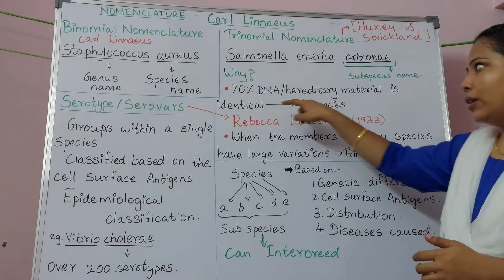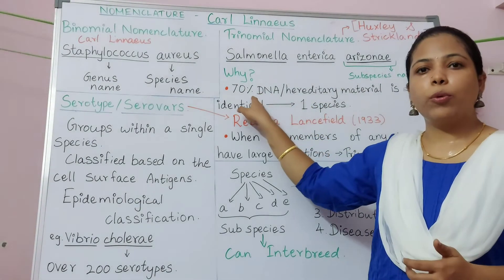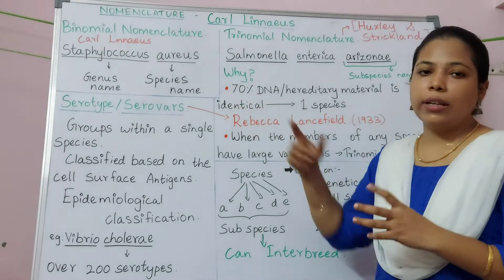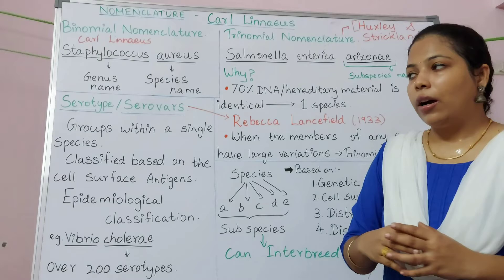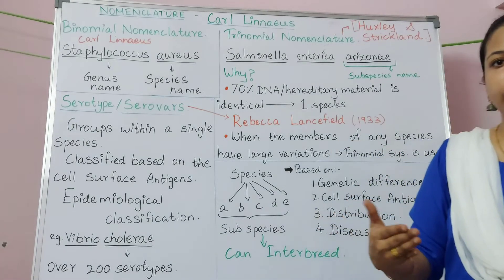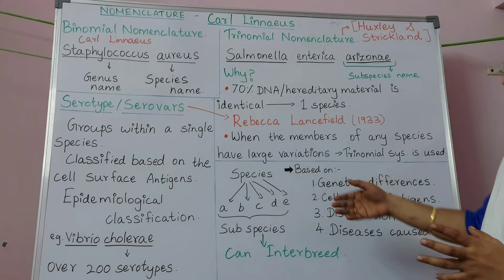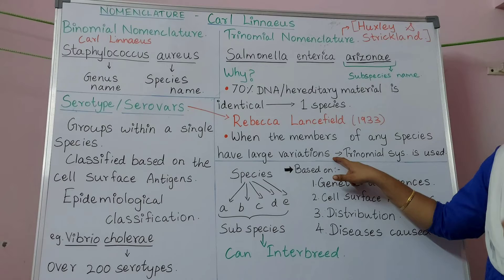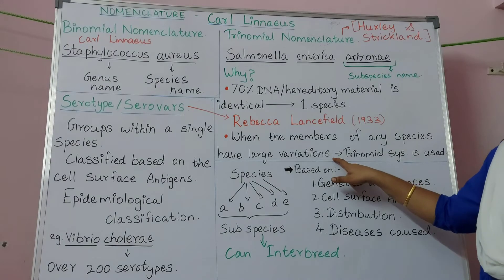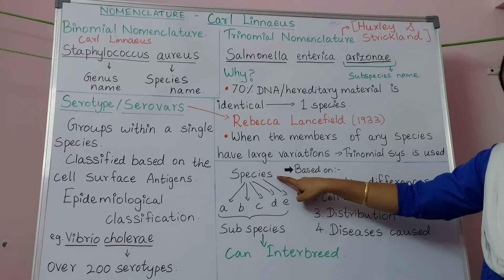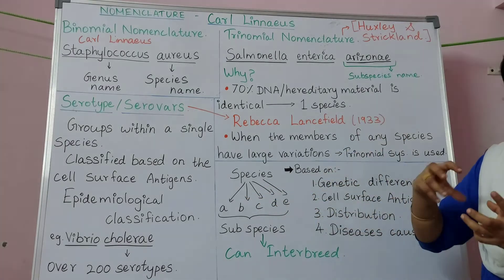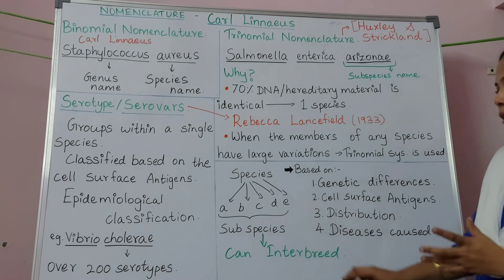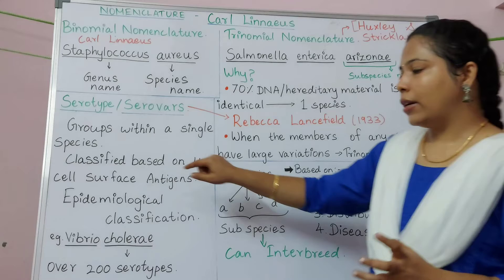Why should we have a subspecies name? If the DNA sequences of two or more microorganisms are at least 70 percent identical, they are placed in one species. The remaining 30 percent may be similar or dissimilar. If the members of a particular species have huge variations in their DNA sequences or characteristics, then that particular species can be classified into many small groups, called subspecies.